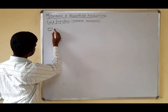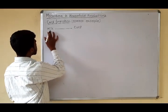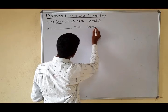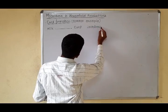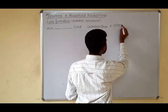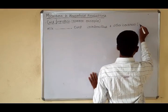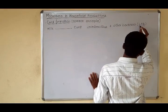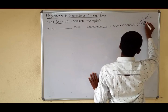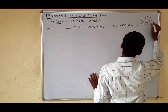Milk is converted into curd by using a special kind of bacterium. The names of the bacteria are Lactobacillus and other bacteria. We together call them LAB, where LAB stands for Lactic Acid Bacteria.